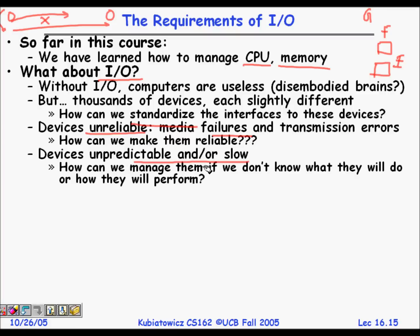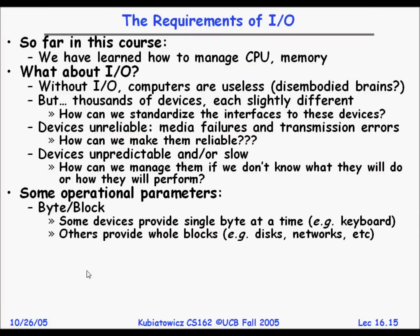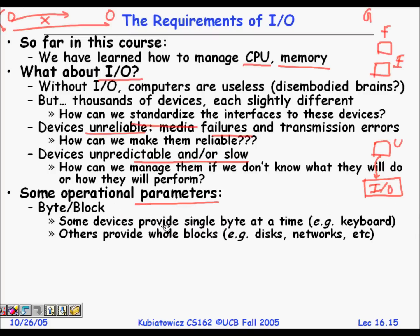Devices are unpredictable and may be slow. The user is the boss here — the input/output system is essentially a black box to them. The user of the operating system just wants whatever they are requesting to work fine and doesn't care how the I/O system manages it internally. Some operational parameters: I/O devices can either read or write — I might be reading from a disk or CD, or writing to a hard disk.